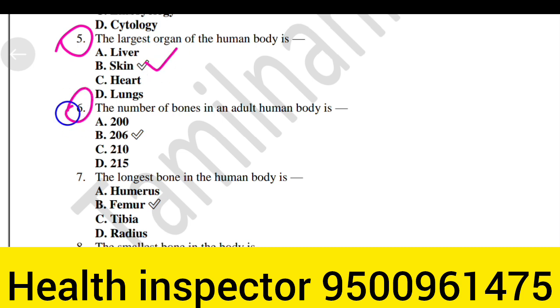The number of bones in an adult human body is Option B, 206.